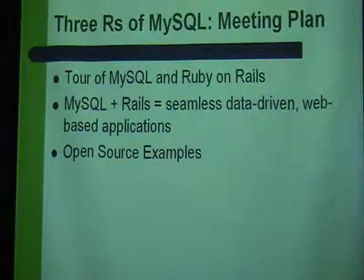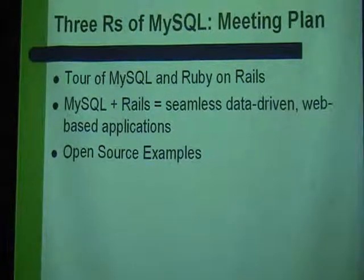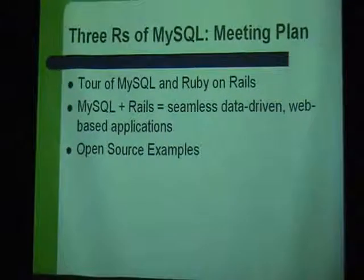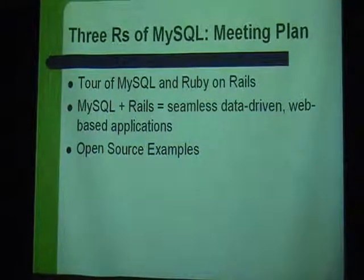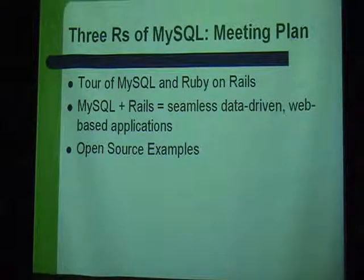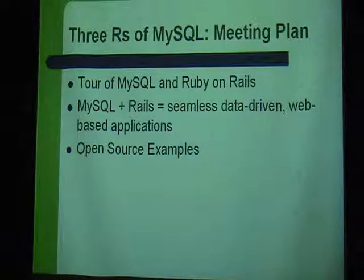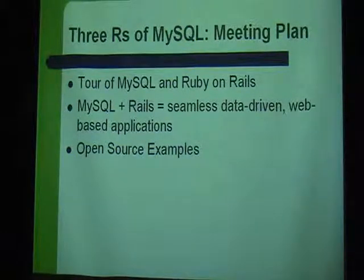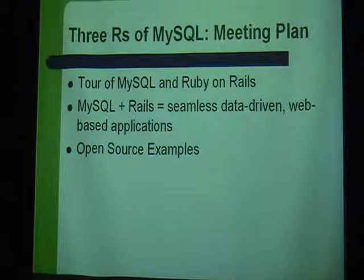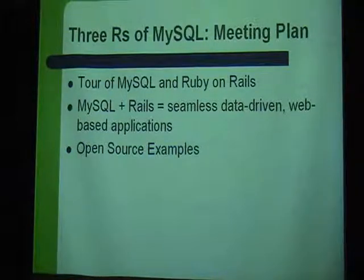Rails is a web framework for developing data-driven applications — web applications that have lots of data pumped out to the web through browsers. The default database environment that people use to demonstrate what Rails can do is MySQL. If you look at all the books and examples and the working stuff out there, a lot of it is using MySQL, which should be familiar to folks in this group.